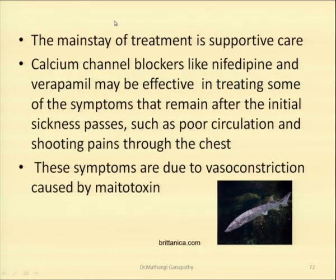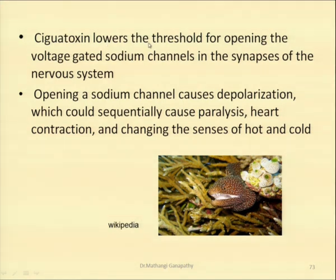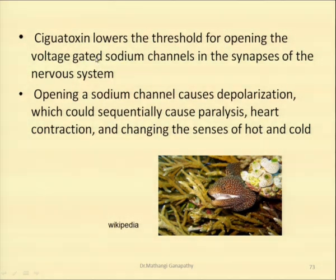The mainstay treatment is supportive care. Calcium channel blockers like nifedipine and verapamil may be effective in treating some of the symptoms that remain after the initial episode passes, like poor circulation and shooting pains in the chest. There is no effective treatment, but after the food poisoning episode has passed, the long-range effects can be slightly reduced by using calcium channel blockers. This effect is because of vasoconstriction caused by the maitotoxin. Ciguatoxin lowers the threshold for opening the voltage-gated sodium channel in the synapses of the nervous system, and opening the sodium channel causes depolarization, which could sequentially cause paralysis, heart contraction, and changes to the senses of hot and cold.